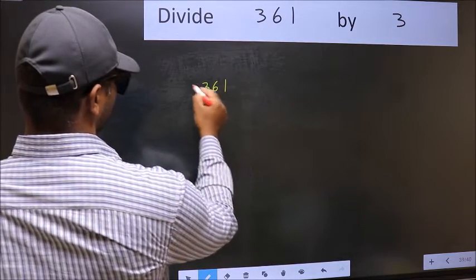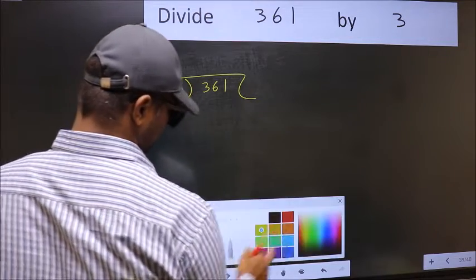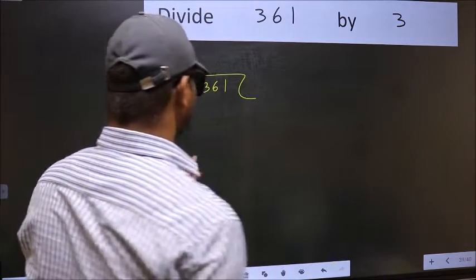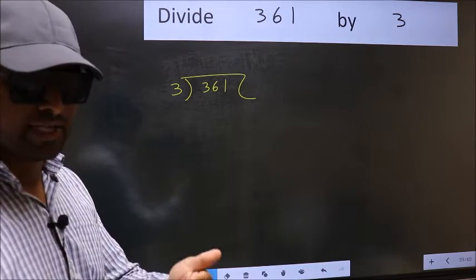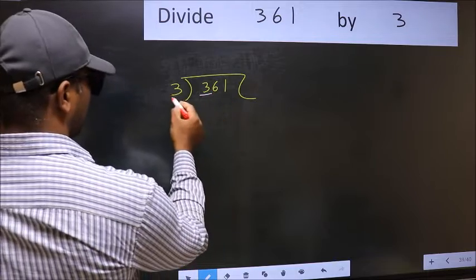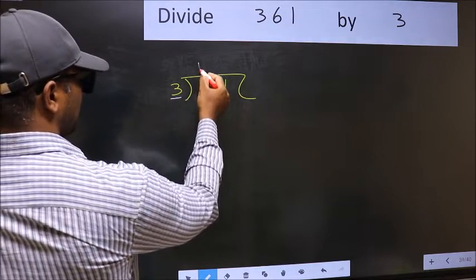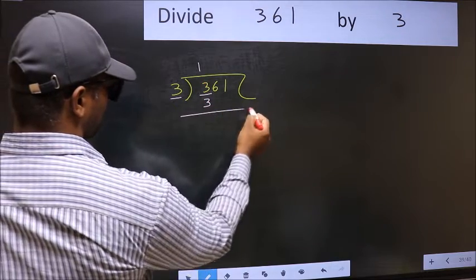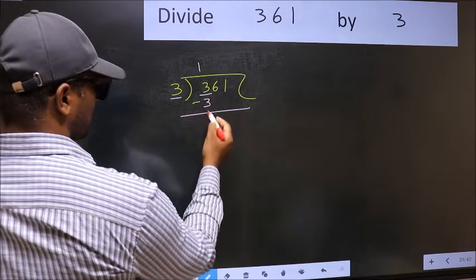361 and 3 here. This is your step 1. Next, here we have 3 and here also 3. When do we get 3 in 3 table? 3 once 3. Now you should subtract. 3 minus 3, 0.